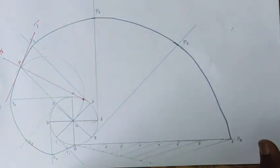So that is the involute. And for drawing the tangent and normal, we have selected a point as given in the question, that is 80 mm from the center.